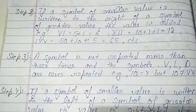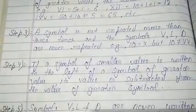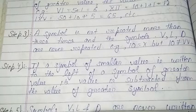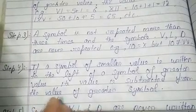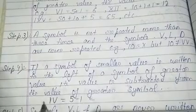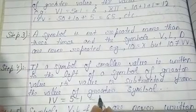Step 4: If a symbol of smaller value is written to the left of a symbol of greater value, its value is subtracted from the value of the greater symbol. For example: IV, here 5 minus 1 equals 4, because the smaller symbol is written before the right side, so it's subtraction.